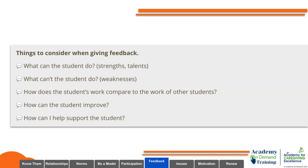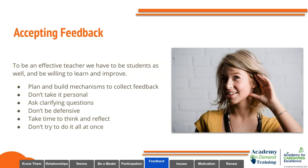Things to consider when giving feedback: What can the student do — what are their strengths and talents? What can't the student do — what are their weaknesses? How does the student's work compare to that of other students? How can the student improve, and how can you support them in their efforts? When accepting feedback, don't take it personally, ask clarifying questions, try to avoid being defensive, take time to reflect upon what you've heard, and don't try to improve everything at once — make a plan and stick to it.